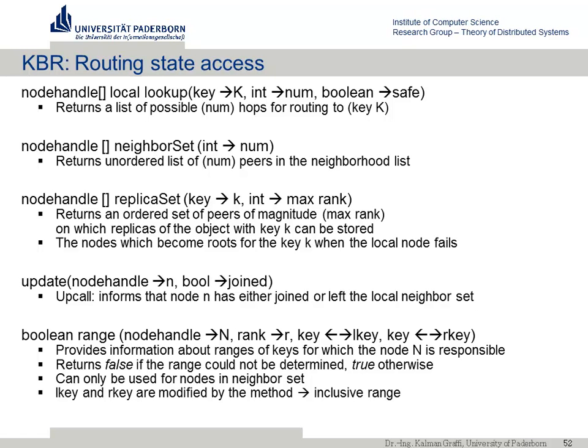This is a very useful API overall, and most DHTs that become more successful try to adapt to it. It is really difficult to write applications that can operate on DHTs such that if you want to exchange the DHT, you don't have to exchange the whole application. If you stick to this prominent API, you can exchange the underlying overlay without rewriting the application.